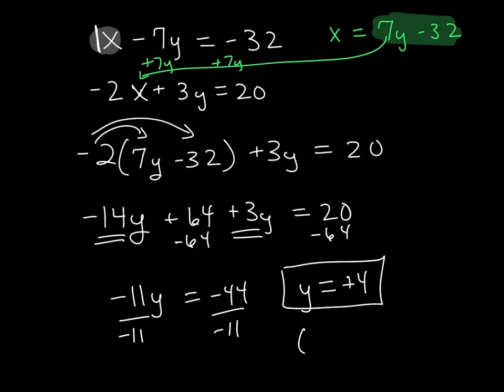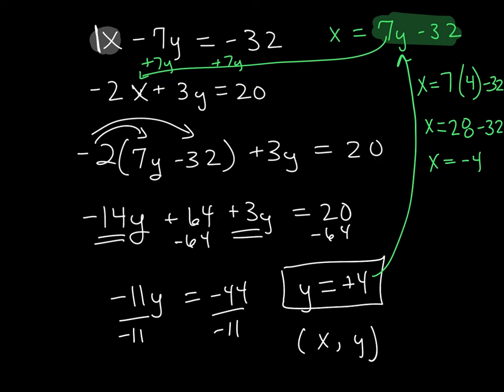But remember, you have to always answer for these as an ordered pair. So in order to find out what that ordered pair is, I have to go back to the top and find out what x is. So x = 7 times my y value I just found, which is 4, minus 32. So x = 28 - 32, or x = -4. You must write your answer as an ordered pair. Always x first, so that's -4, comma 4. That would be your final answer for question 6.